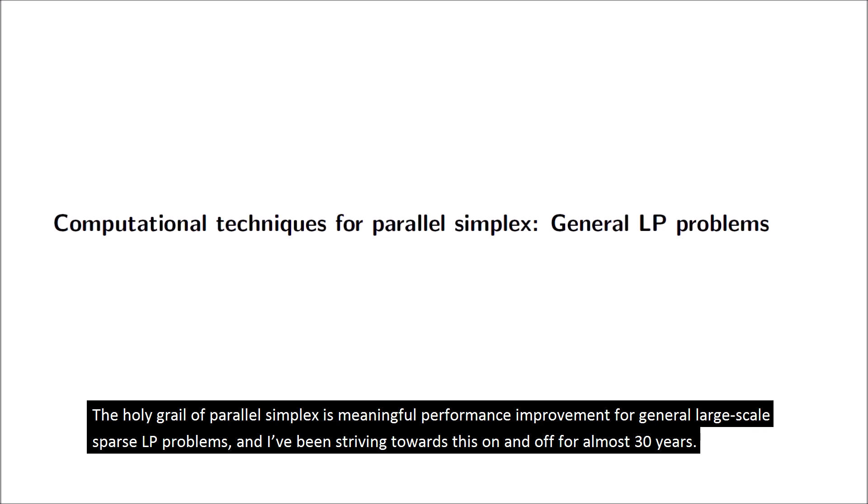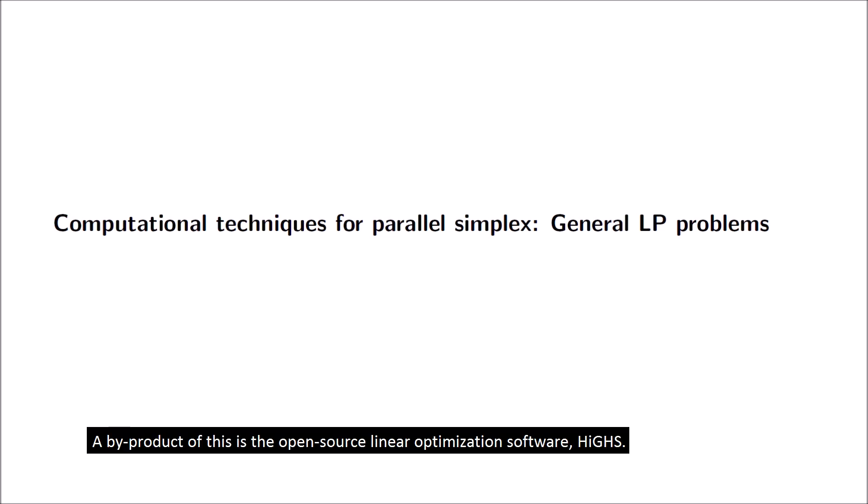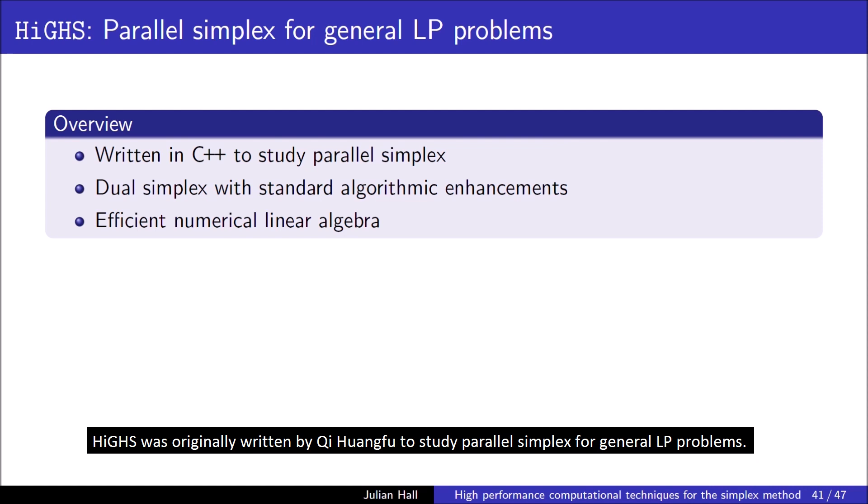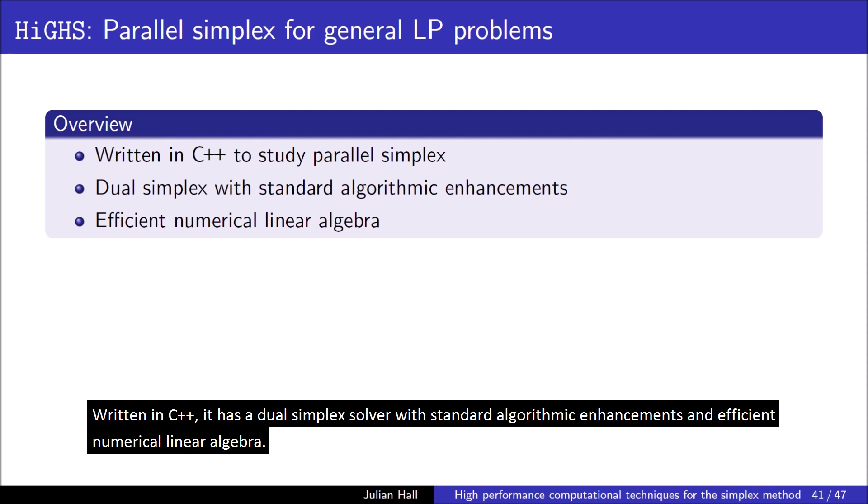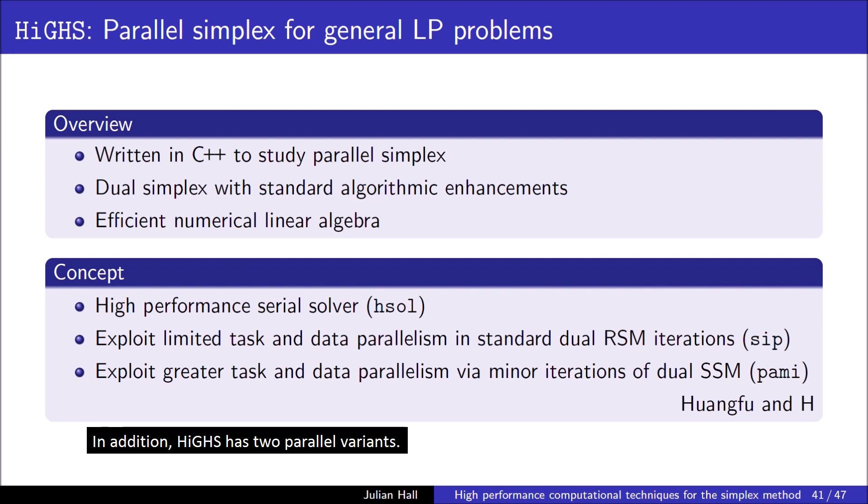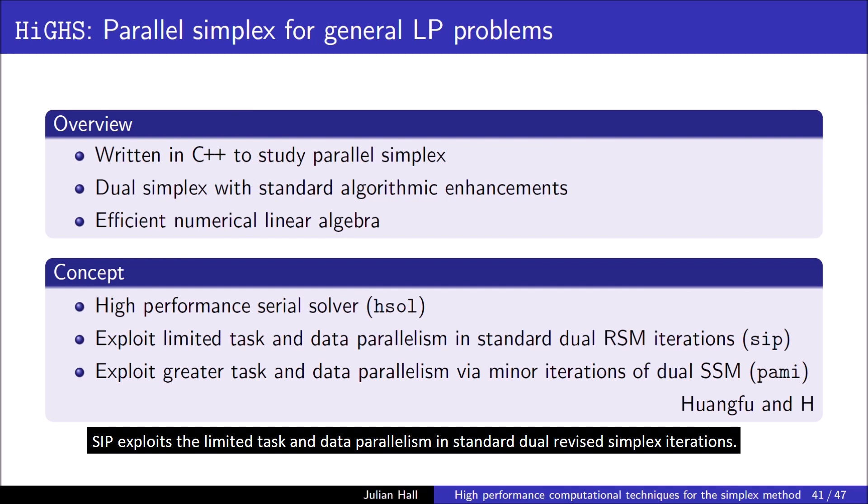The holy grail of parallel simplex is meaningful performance improvement for general large-scale sparse LP problems, and I've been striving towards this on and off for almost 30 years. A by-product of this is the open-source linear optimization software HiGHS. HiGHS was originally written by Qi Huangfu to study parallel simplex for general LP problems. Written in C++, it has a dual simplex solver with standard algorithmic enhancements and efficient numerical linear algebra. In addition, HiGHS has two parallel variants.